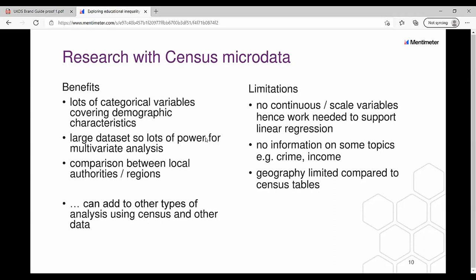One of the limitations is that there are no continuous or scale variables, so it's difficult to work with things like linear regression — it's very much a categorical analysis, and today we're looking at logistic regression. There is no information on some topics we might be interested in: crime, income — nothing on either. And the geography is relatively limited compared to census tables; the lowest level is grouped local authority, which in England equates to around 260 authorities grouped from the 320 or so that exist.